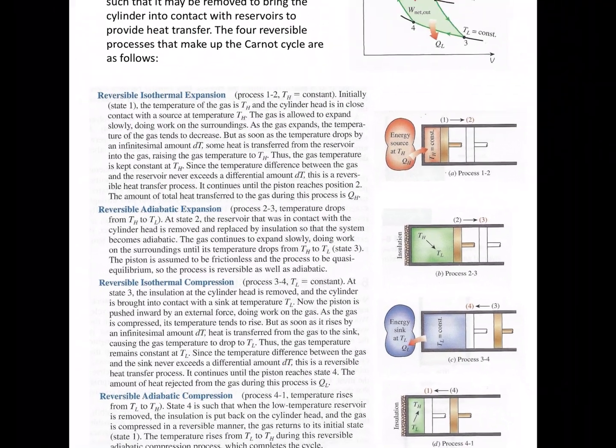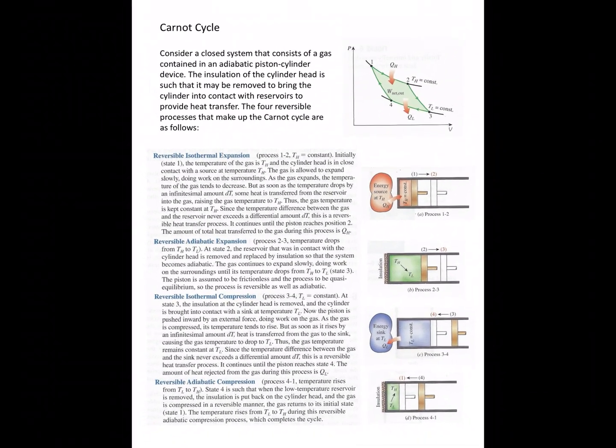So then we have an adiabatic expansion. Then we remove the insulation. We put the sink that's still at the new lower temperature and reject that QL out of there and then insulate it again. So again, this is not possible, but it's the goal. It's the ideal. This is what the Carnot cycle looks like on our PV diagram.